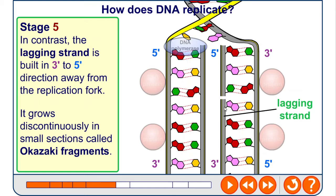It gets built in what's called Okazaki fragments because it's moving away from the replication fork, so it can't be continuous. It's essentially like a loop—it starts, moves down as the complementary bases are added, and then returns to the replication fork and continues this in small sections.